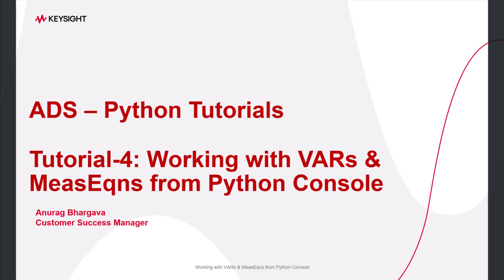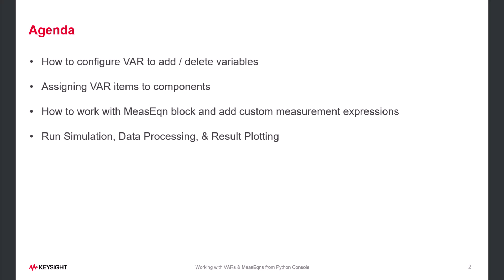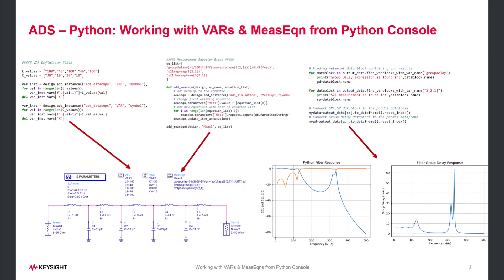Hello, welcome to ADS Python tutorials. This is tutorial 4, in which we will talk about how to work with variables and measurement equations from the Python console. Both of these topics are very important to understand, especially if you are looking to do a little more complex Python automation. Here's the agenda for this session — it's going to be a very interesting session with a lot of useful information, so I hope you will stay till the end.